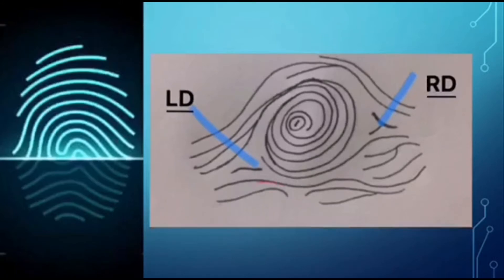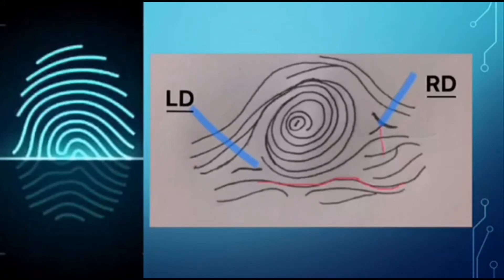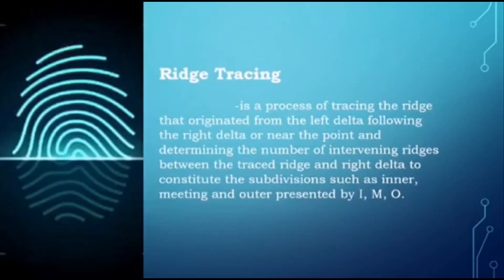In ridge tracing, before we do the ridge counting, we must first trace the ridge from the left delta to the right delta. We stop the tracing at the near point of the right delta, then draw an imaginary line and count the intervening ridges between the trace ridge and the right delta, in order to determine whether the whorl pattern is classified as inner, outer, or meeting.